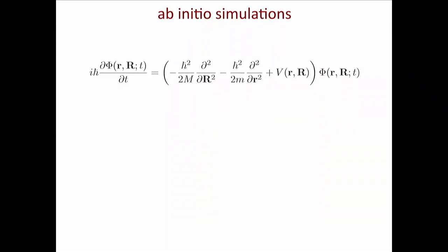In our community, the holy grail — what everybody would like to be able to solve — is the time-dependent Schrödinger equation that regulates the time evolution of a wave function depending on a zillion nuclear coordinates (capital letters) and several zillions of lower-case electronic coordinates. This contains the kinetic energy of the nuclei, the kinetic energy of the electrons, and the potential energy accounting for the interaction of nuclei with electrons, electrons among themselves (giving rise to correlation effects), and nuclei among themselves.